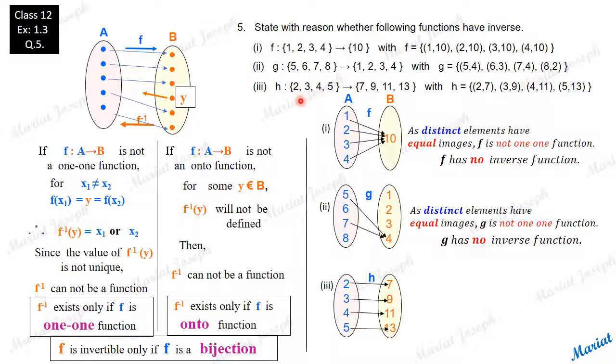Another example. H. Defined from set {2, 3, 4, 5} to {7, 9, 11, 13}. And the roster form tells you 2 is related to 7, 3's image is 9, image of 4 is 11, etc. Here is the arrow diagram. Here we observe this function is one-one as well as onto.